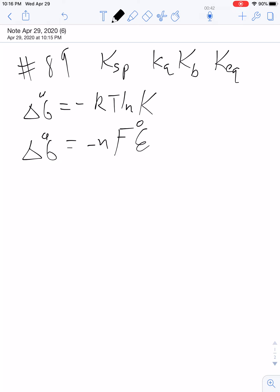So we can set those two equations equal to each other. Negative RT ln of K is equal to negative NFE cell voltage.